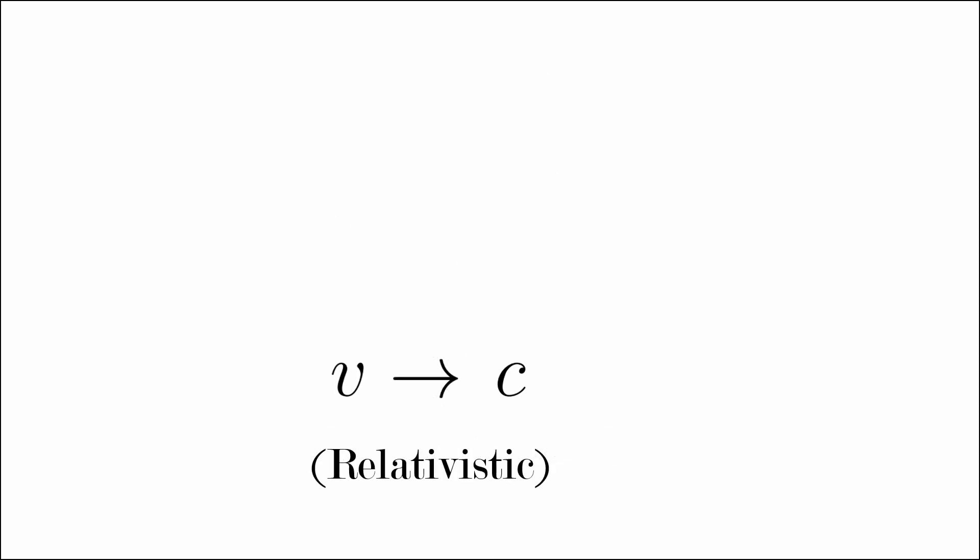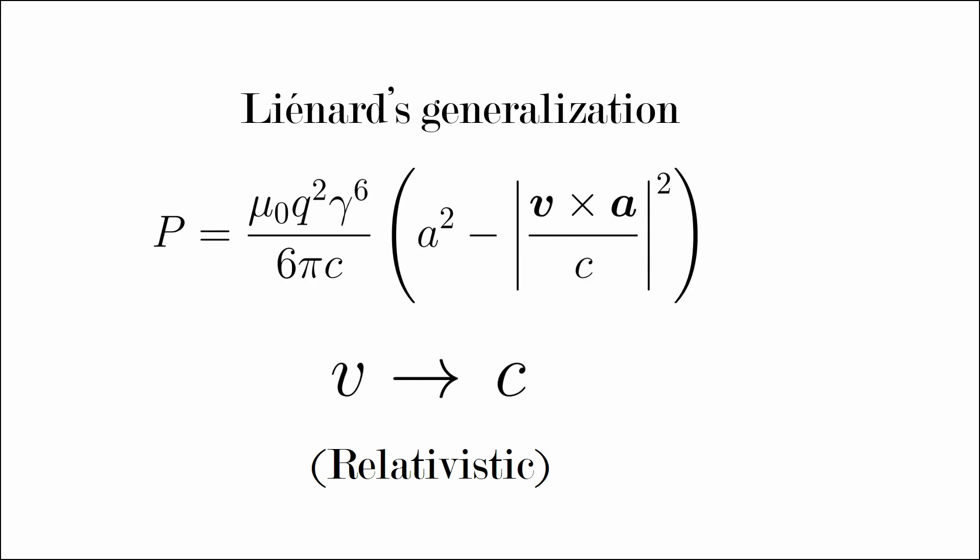In the relativistic case, which is when the particle approaches the speed of light, the equation can be generalized by Liénard's relation, where gamma is a Lorentz factor.